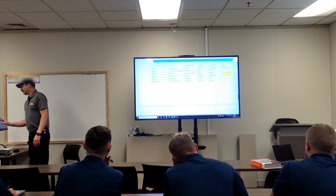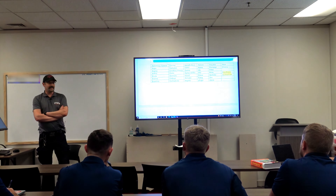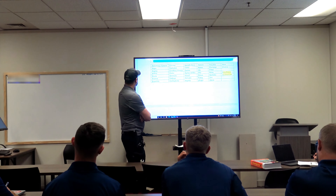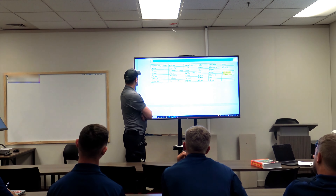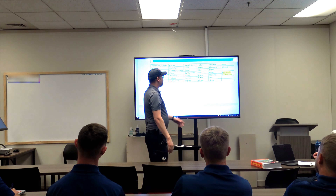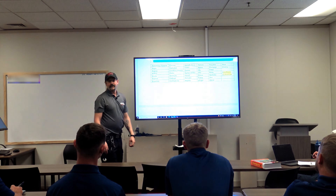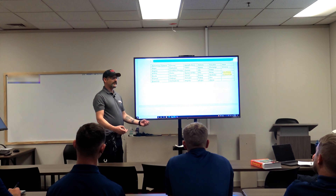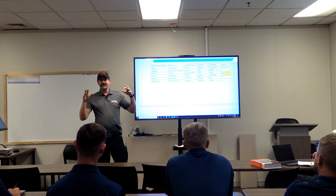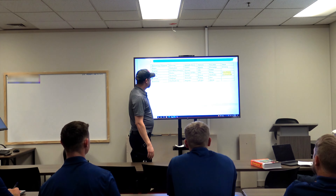There's a long list of root words and it can get confusing. Angio and angina are two totally different things. Cerebral and costo — and it's costo, not Costco. There's also the difference between anesthetist and aesthetician: one keeps you under during surgery and the other makes your face look pretty. Just understand that these terms require careful attention.